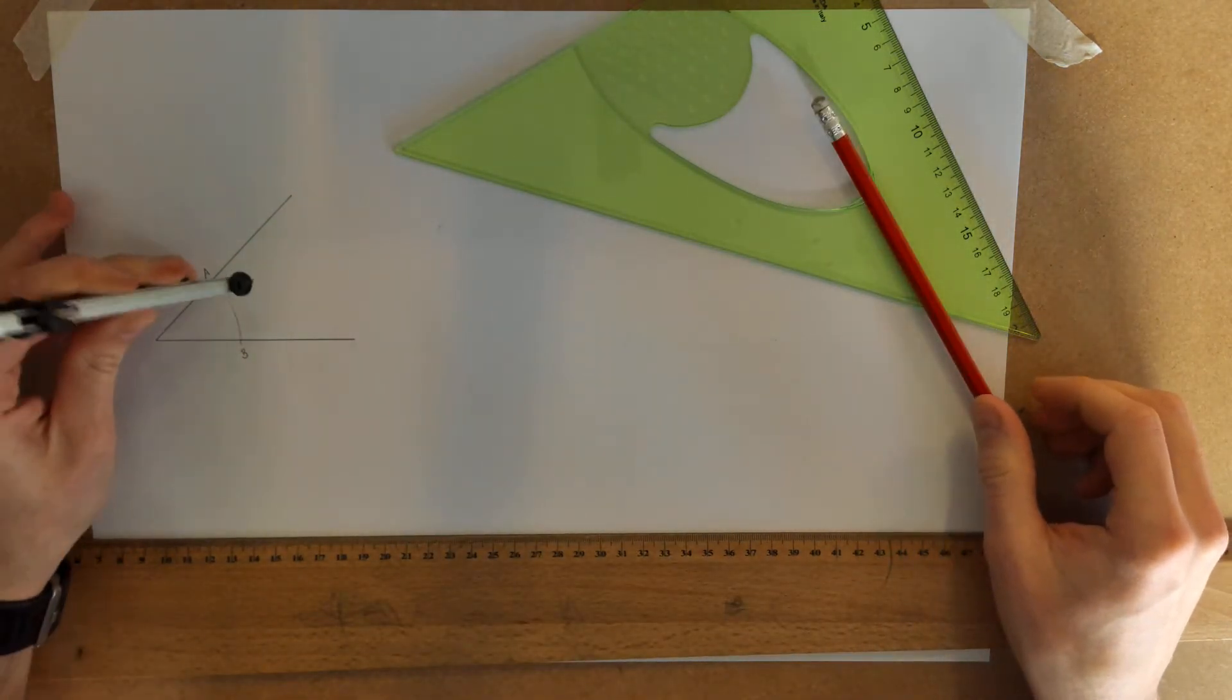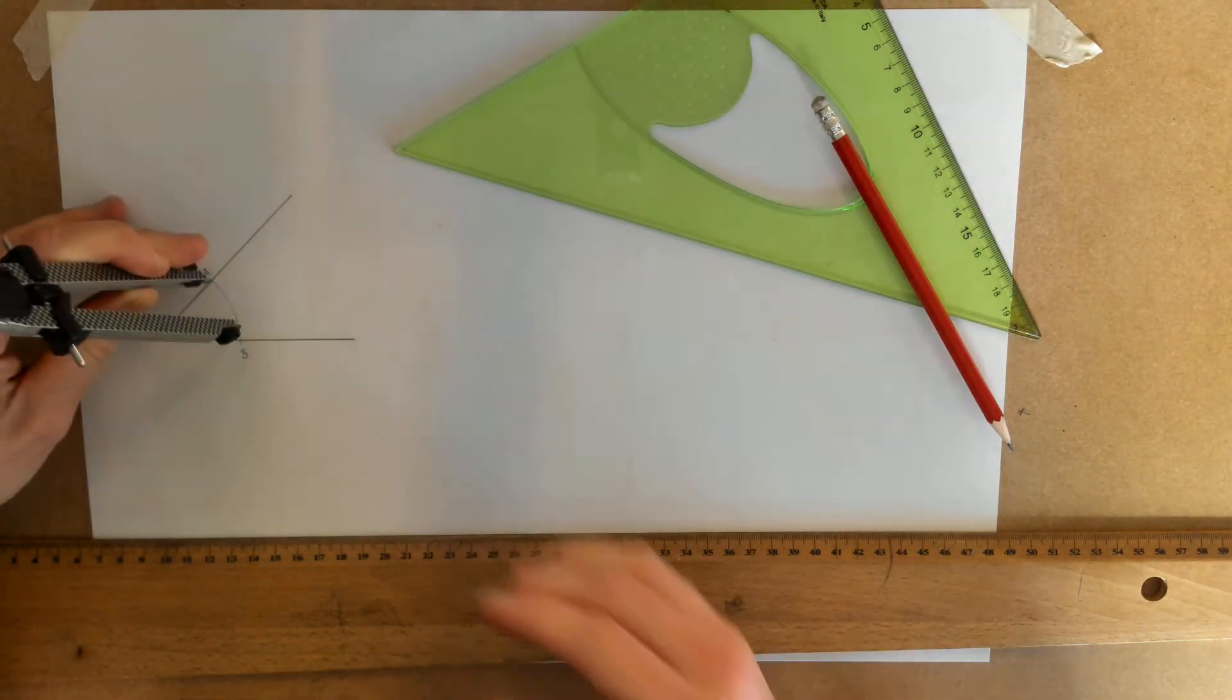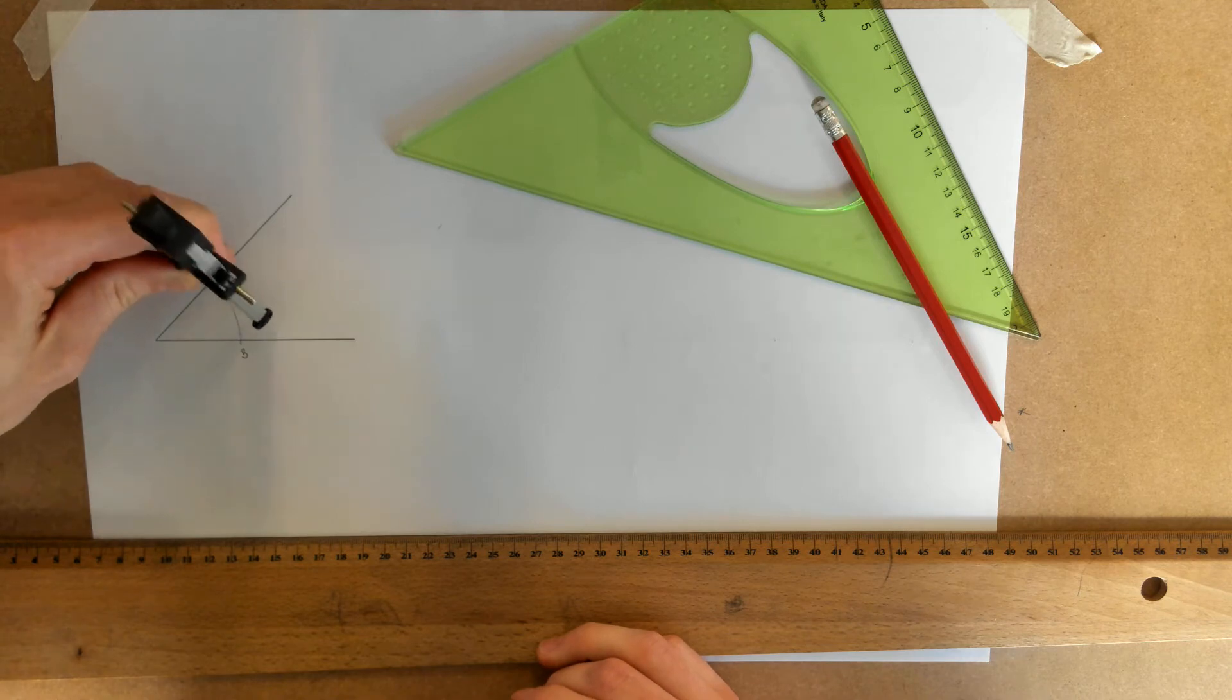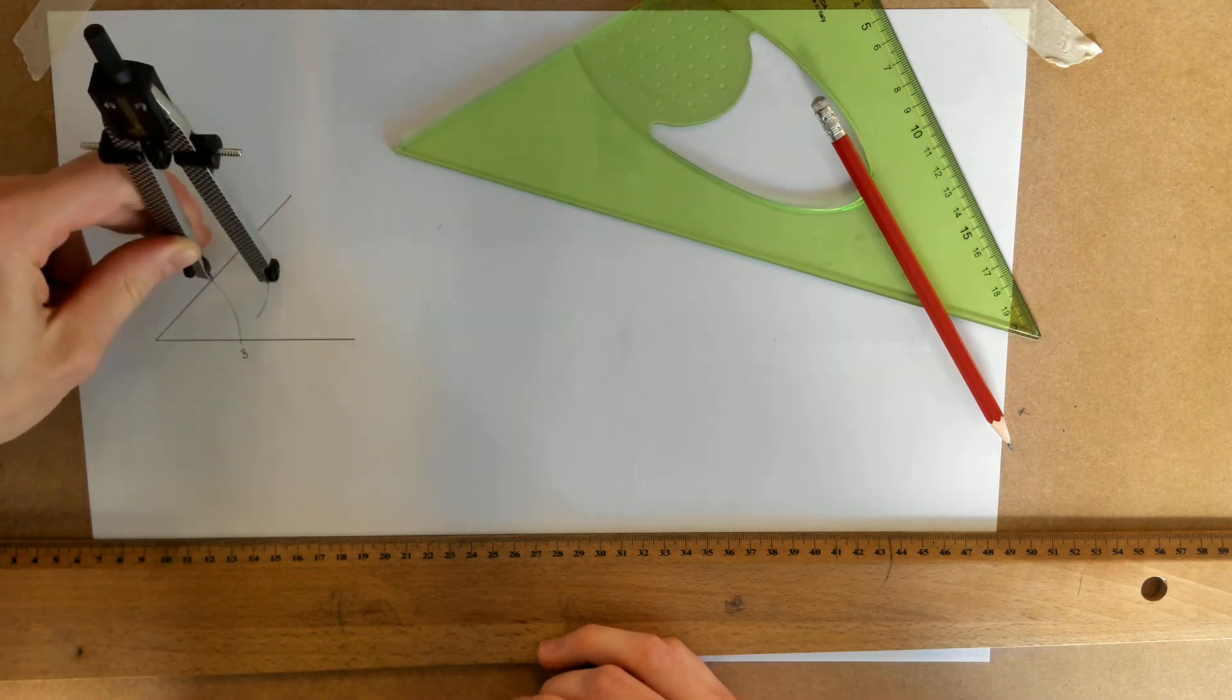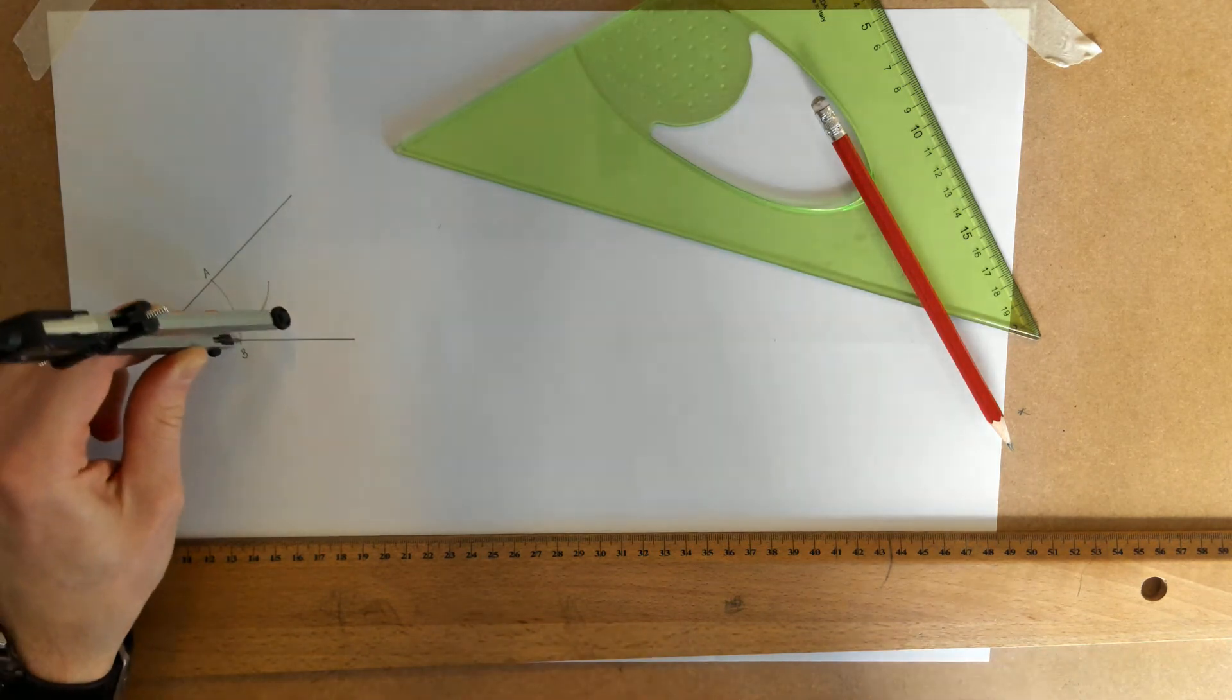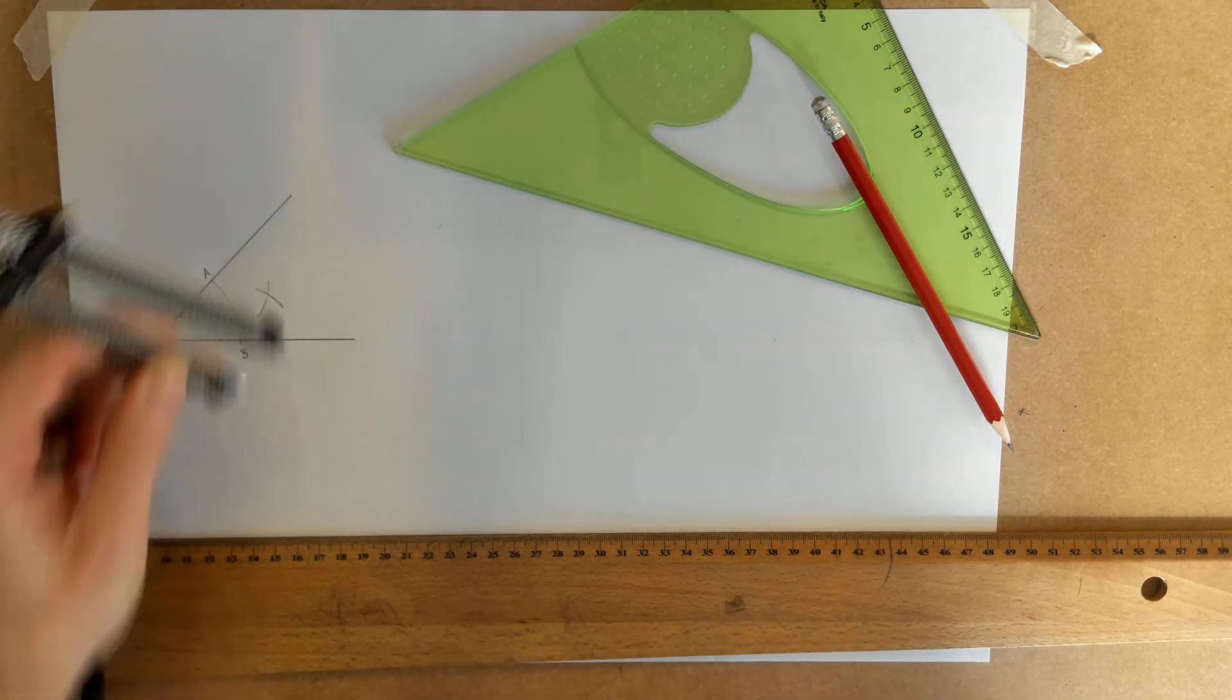Take the compass again and open it up to over half the distance between point A and B. Swing an arc from point A. Then move over to B, keeping the compass at the same distance, and swing another arc.